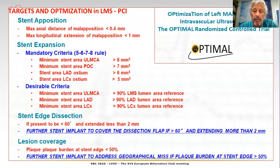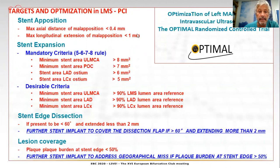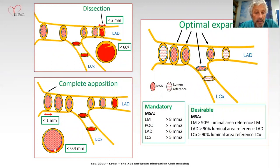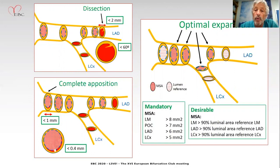In the OPTIMAL trial, which we are right now in the enrolling phase, an important trial randomizing patients to IVUS or angiography during PCI of the left main, there are several criteria with respect to apposition, expansion, edge dissection, and lesion coverage. The tolerated dissection should be very short and less than 60 degrees in circumference. Complete apposition should have gaps less than 1 mm in length and less than 0.4 mm in magnitude. The optimal expansion mandatory criteria correspond to 5, 6, 7, 8 mm² for the different sites in the left main, LAD, and circumflex, or the desirable targets of more than 90% expansion with respect to the luminal area reference in the left main, LAD, and circumflex.